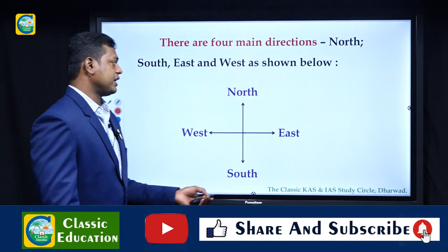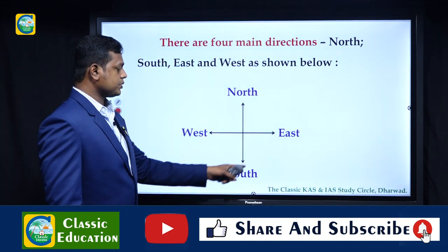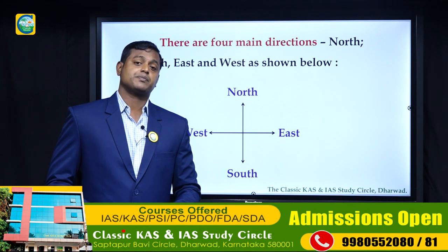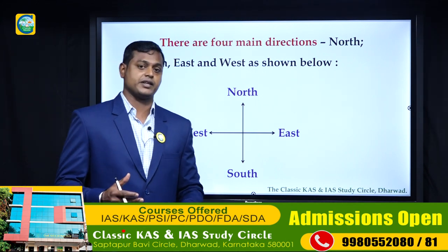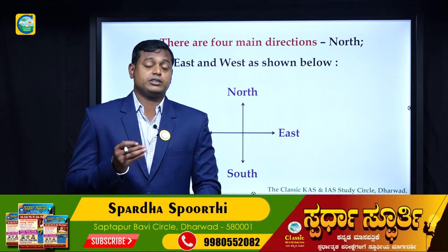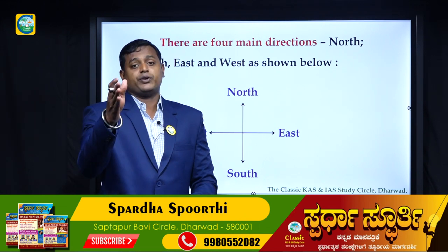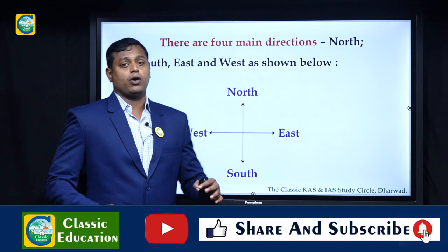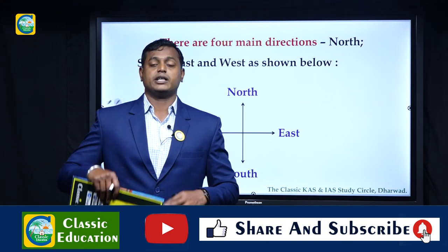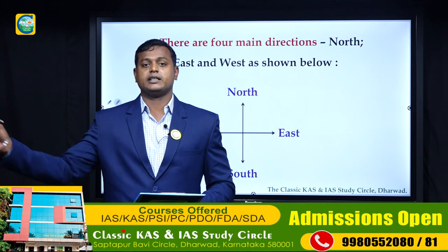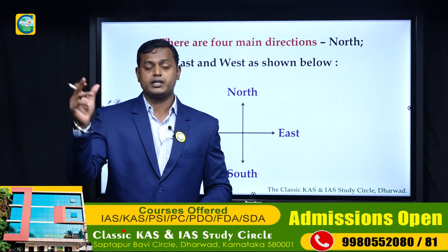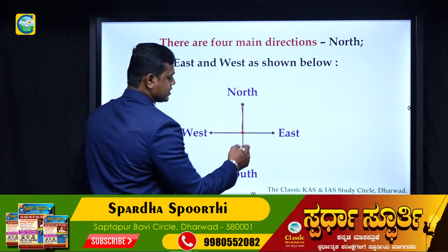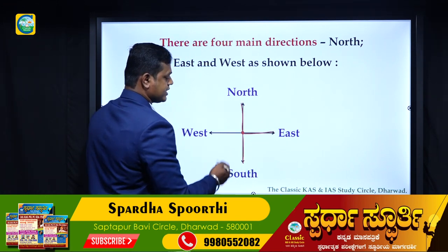There are four main directions: north, south, east, and west. When solving direction test problems in an examination or practice, think of it this way: the front side of you is north. So if you are standing in the middle, your front side is north, behind is south, your right side is east, and your left side is west.